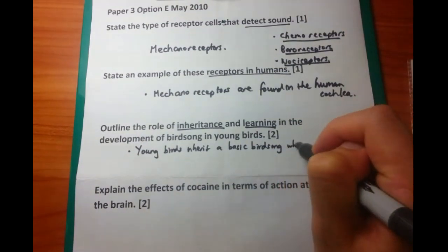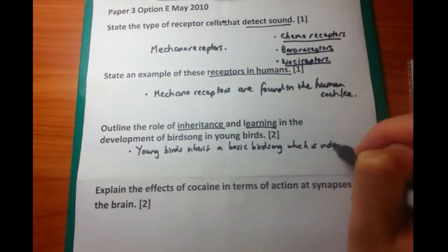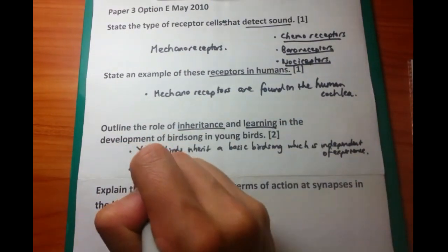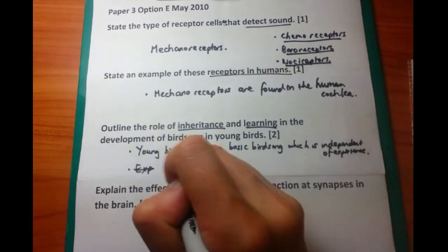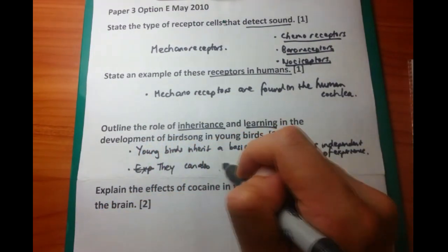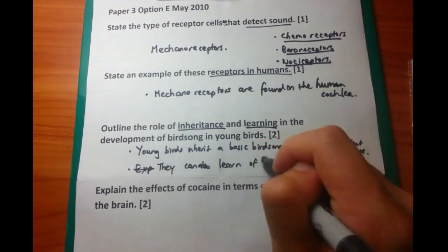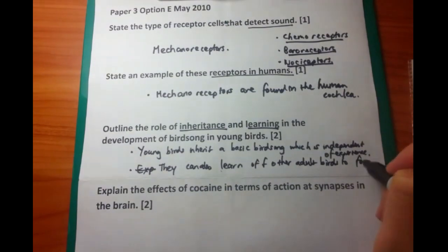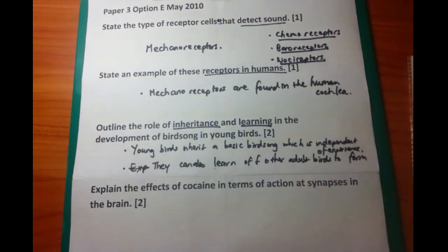So inheritance. Young birds inherit a basic birdsong which is independent of experience. They are born with it and can use that basic birdsong without any learning at all. What they can do, rather, is that they can learn from other adult birds to form a more complex birdsong. In this case it builds upon their basic birdsong which they have inherited.